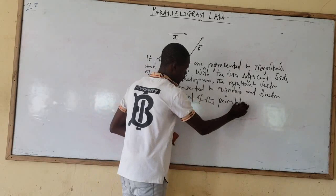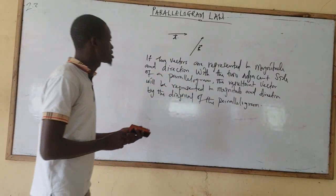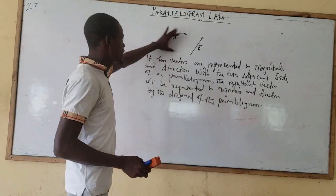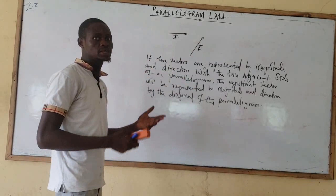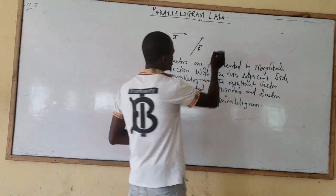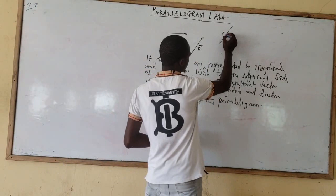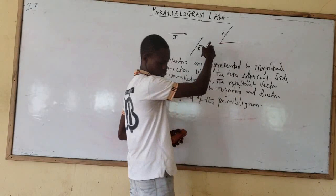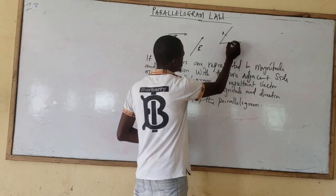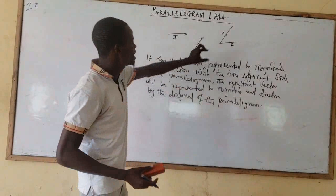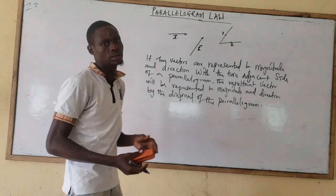Now let's take a look at what the law is trying to tell us. If I'm given two vectors — let's say vector A and vector B — that are represented in magnitude and direction by two adjacent sides of the parallelogram, let's say we have vector A acting towards this direction and vector B. The two vectors are adjacent to each other; they meet at a single point A. To add these two vectors together, we can only add them by constructing a parallelogram with the vectors.